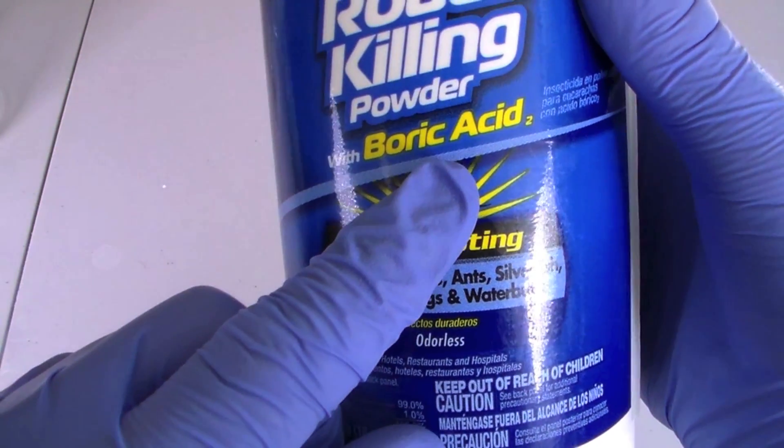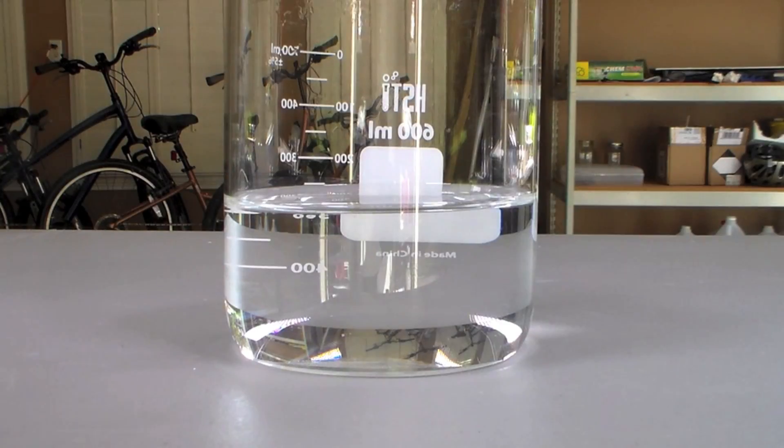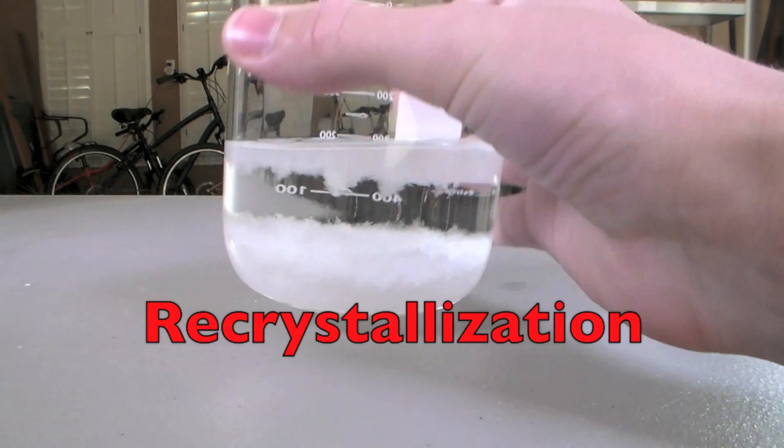99% boric acid can be bought as roach killer at hardware stores. To remove the small amount of impurities, we will carry out what is known as a recrystallization.